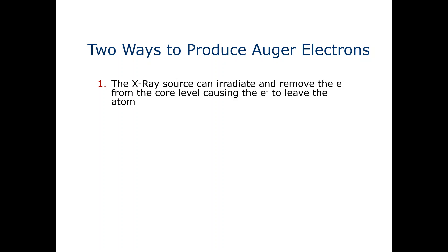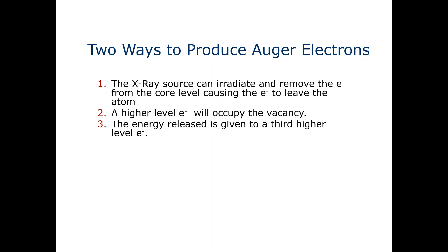There are four steps by which we can describe the emission of the Auger electron. First, the X-ray source irradiates and removes the core electrons from the atom — that is the first step. In the next slide we will show the process with a diagram. The second step is that a higher-level electron will occupy the vacancy created by the removed core electron.